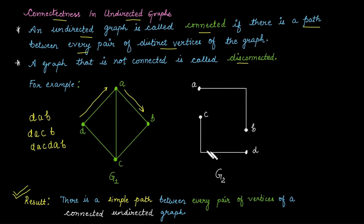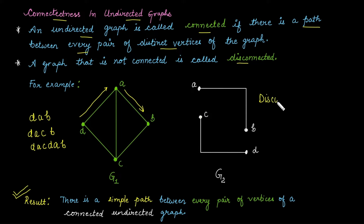Whereas graph G2 is not connected. Why? Because we can start from A and move to B, but from vertex B we cannot move to vertex D or C because there is no edge between these two sets of vertices. Therefore, graph G2 is called a disconnected graph. Moreover, G2 has two connected components: one is {A, B} and the second is {C, D}.